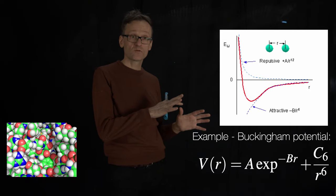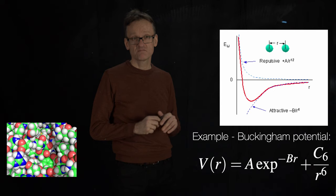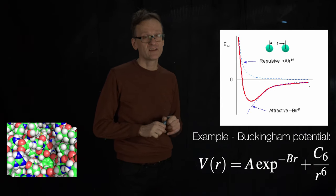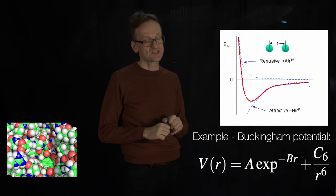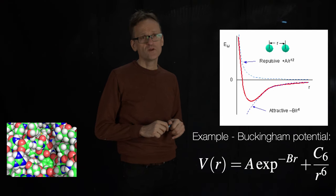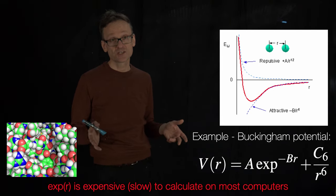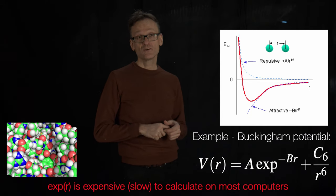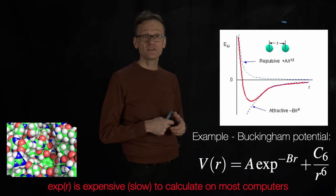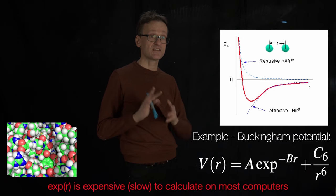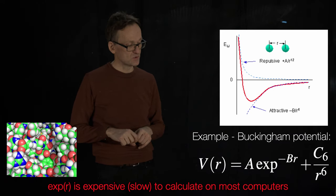This is a potential form called the Buckingham potential and it works pretty well and is used sometimes in computer simulations. The only problem is that calculating the exponential function can take hundreds of clock cycles on a computer. These models were originally developed in the 60s and 70s and they most definitely didn't have GPUs.